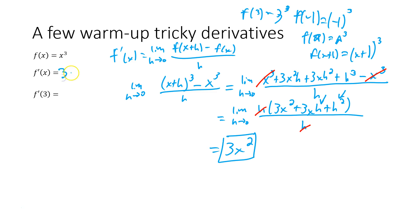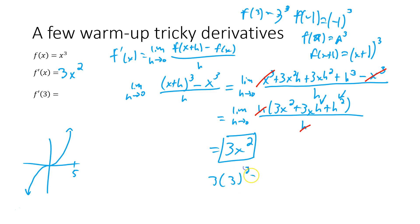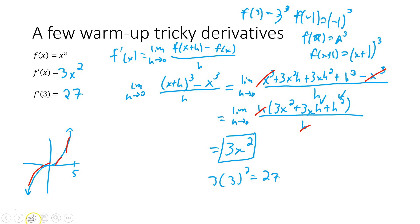So the derivative of x cubed is 3x². This formula gives the slope of the tangent line at any x: at x = 5 the slope is 75; at x = -2 it's 12; at x = 3 it's 27. Notice that 3x² is always positive, which makes sense because every tangent line to x cubed has a positive slope.